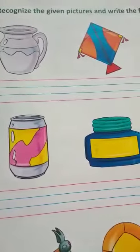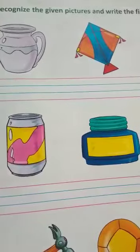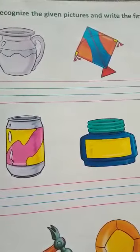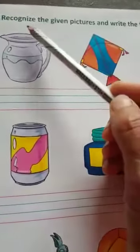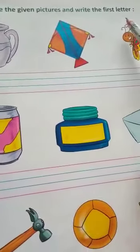Hello kids, good morning to all of you. I am Baby Kumari from Mahatma Gandhi Shikshan Shastan Darbhanga. Today I am going to teach you to recognize the given picture and write the first letter.